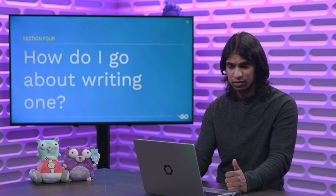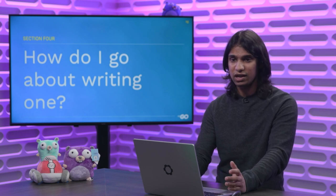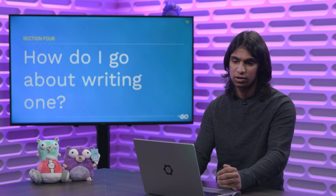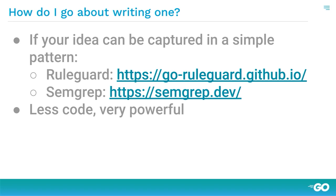Now that we know we don't want false positives and we want meaningful results, how do we actually write a static analysis tool? Before going into the Go packages, let's try some simpler tools that use pattern matching. For example, there's SemGrep or RuleGuard — RuleGuard is written by one of the members of the Go community — where you can write a pattern about some Go code and run it on a huge code base. You don't actually have to write a bunch of code to get it to work.